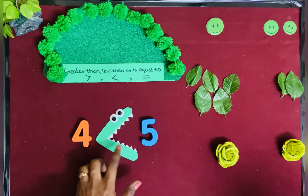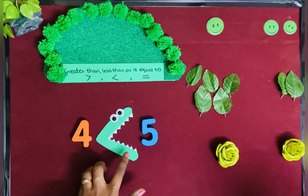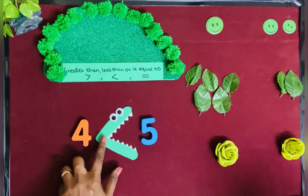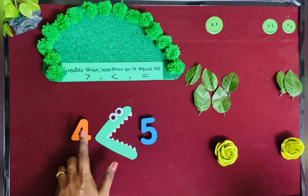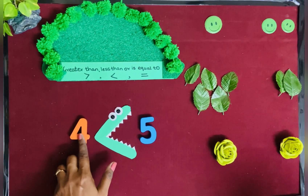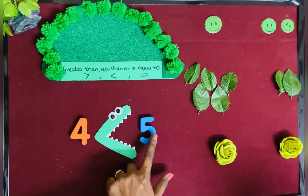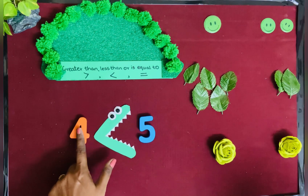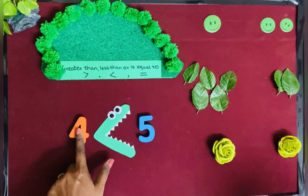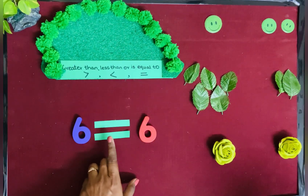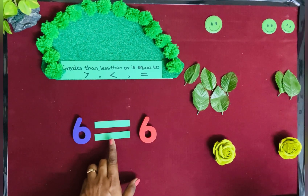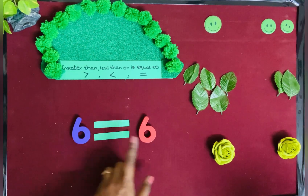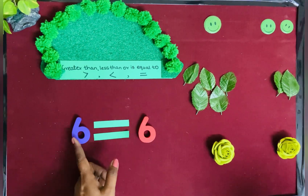This is the less than sign, where the back of its mouth is towards the smaller number 4. The bigger number is 5 and the smaller number is 4. This is the equal to sign, where the numbers on both sides are the same.